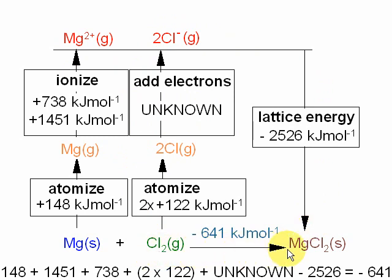What I've written out in the line of math are first these three values, which correspond to going up to Mg2+ gas. These values correspond to going from chlorine to 2 chloride ions, and this involves the unknown. Then the lattice energy comes down the other side, and that is all equal to -641, the formation energy.